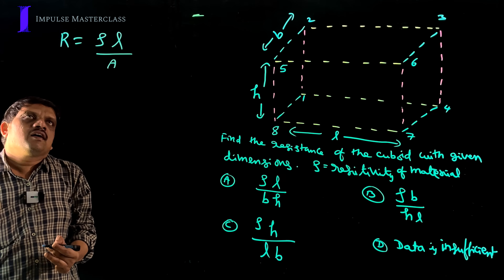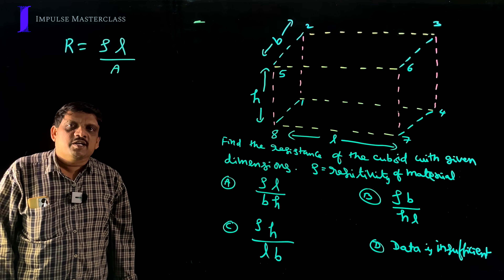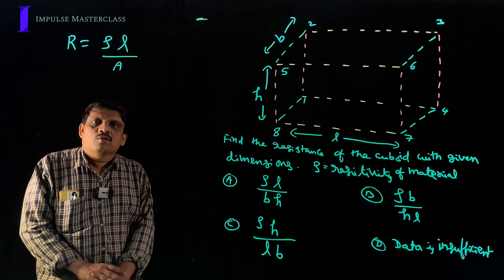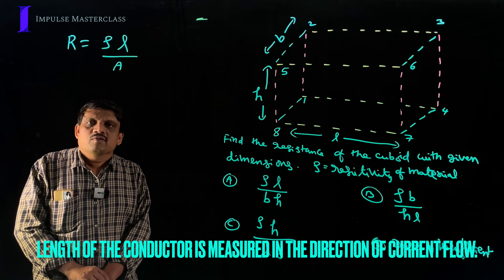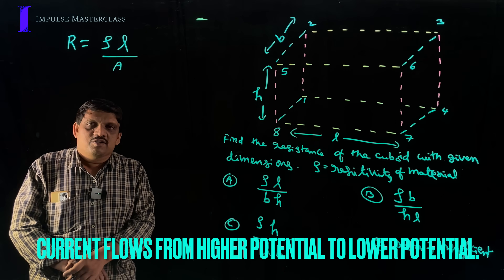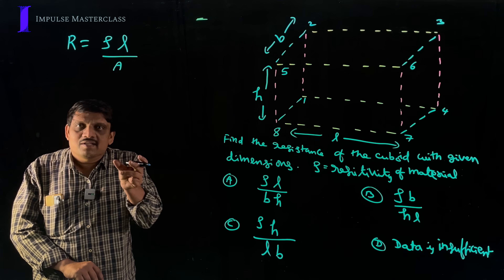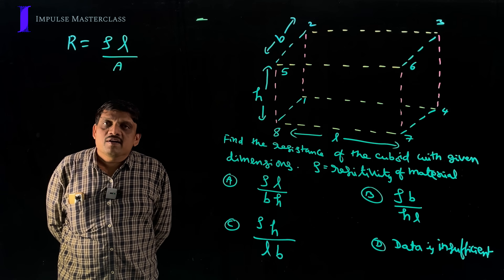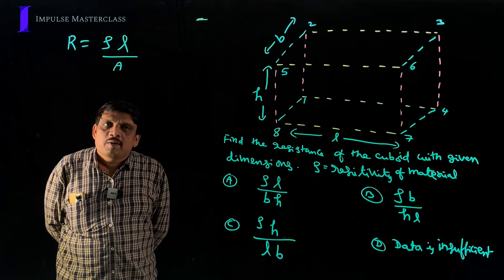In this formula, many students don't know what is length and what is area of cross section of a conductor. Here, L equals the length of the conductor, which is measured in the direction of current flow. Current flows from higher potential to lower potential. Capital A is the area of cross section, measured perpendicular to the direction of current flow.